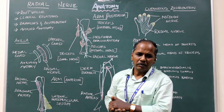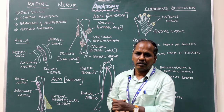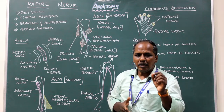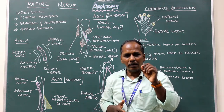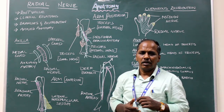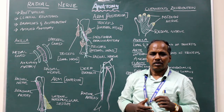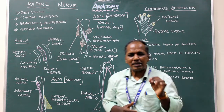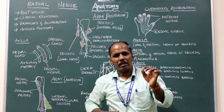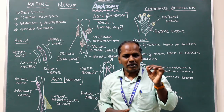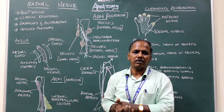Root value: anterior primary rami of C5, C6, C7, C8, and T1 spinal nerves.